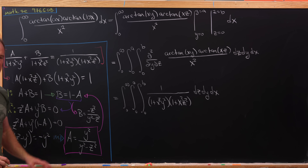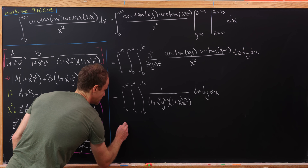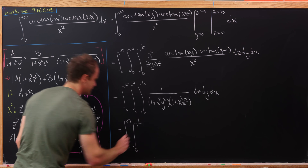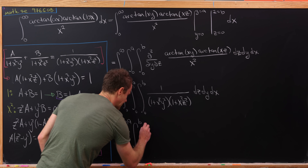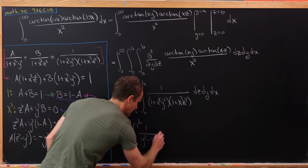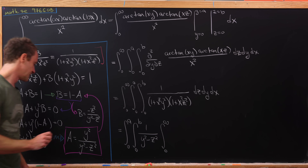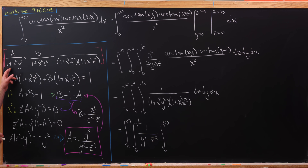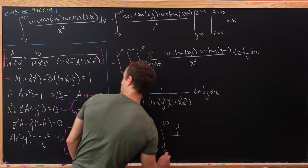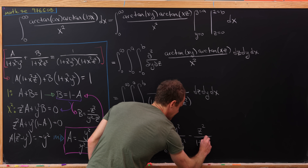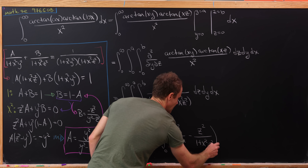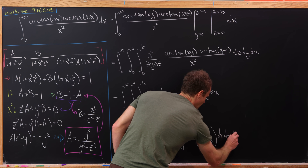Now let's change the order of integration and rewrite. This will be equal to the integral from 0 to a, then the integral from 0 to b, with 1 over (y squared minus z squared) factored out of the x integral from 0 to infinity. Inside we have y squared over (1 plus x squared y squared) minus z squared over (1 plus x squared z squared), in the order dx dz dy.